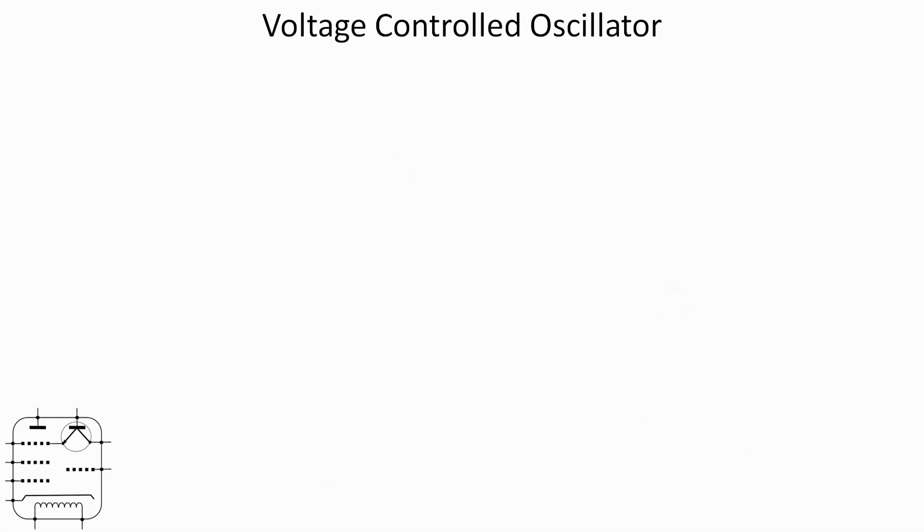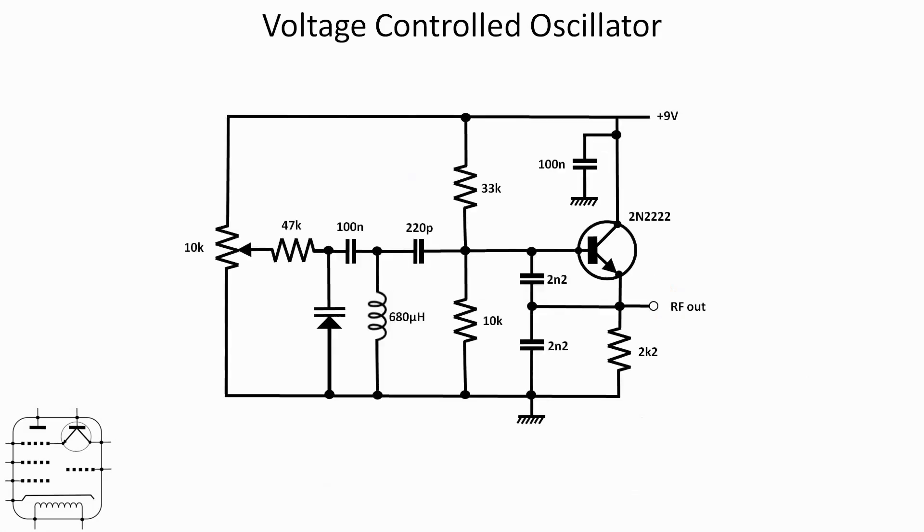So the first one we are going to look at is a voltage controlled oscillator. Here we have a relatively straightforward Colpitts style oscillator circuit, just got a general purpose transistor there on the right hand side, the 2N2222.